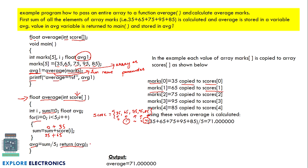Control comes back to the main function, and average1 now holds the calculated average. The next statement prints the average value. This is how we pass an entire array to a function — a local copy is created inside the function, the required calculations are made, and the result is sent back to the calling variable.